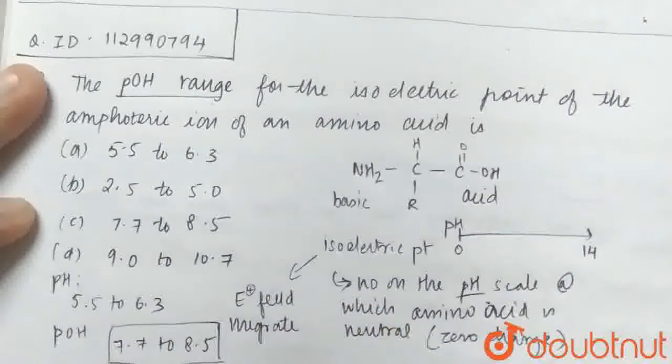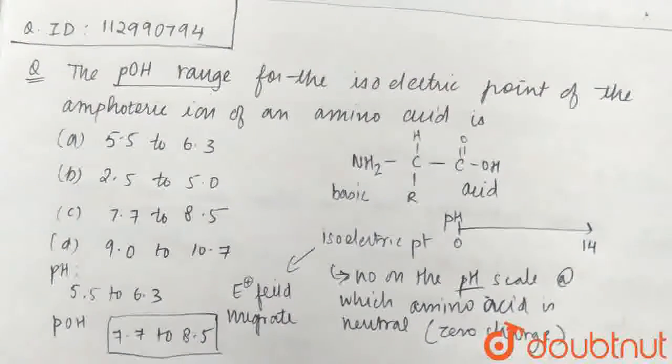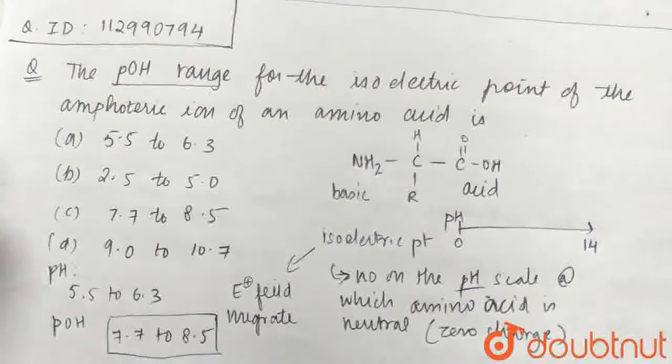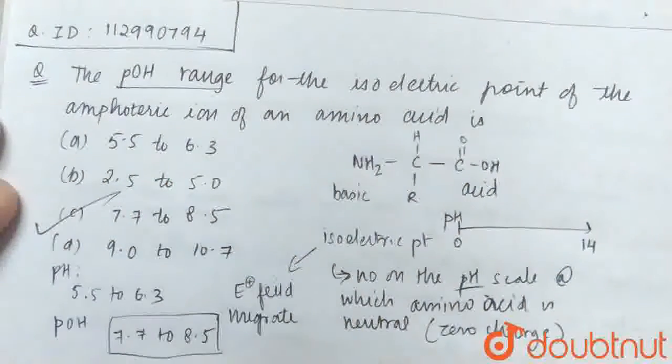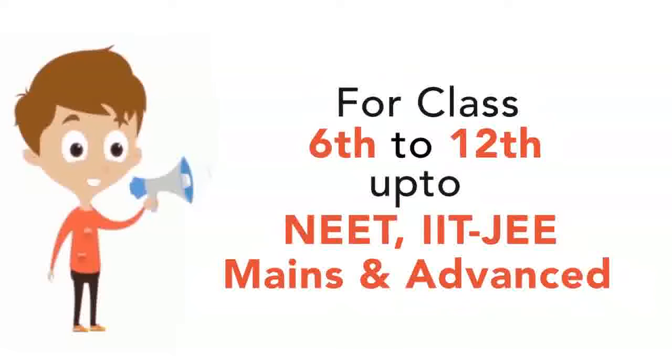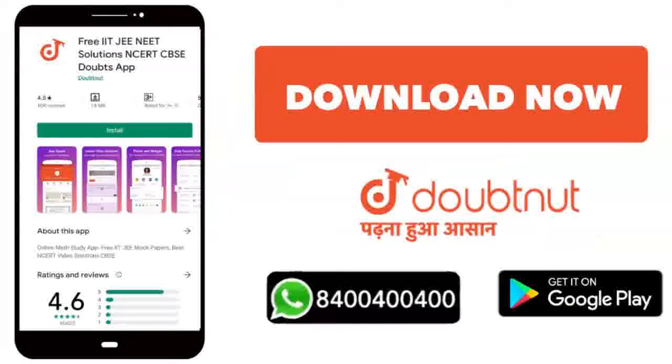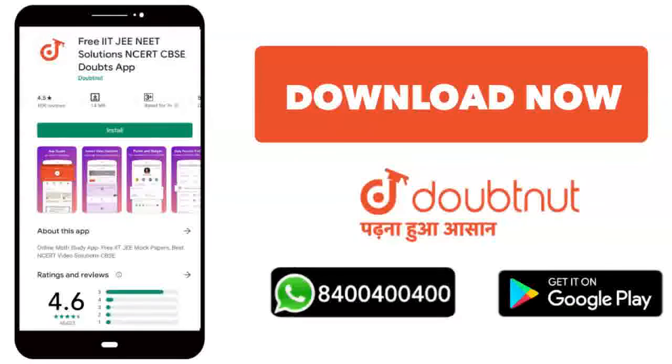So this isoelectric point is 7.7 to 8.5. Among the four options, option C is our correct answer. Thank you very much.